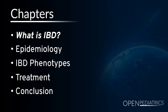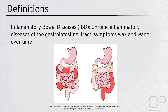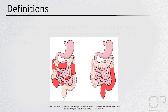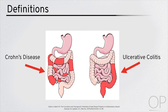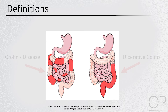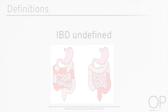What is IBD? Inflammatory bowel diseases, or IBD, are chronic inflammatory conditions that primarily affect the gastrointestinal tract. The two main types of IBD are Crohn's disease and ulcerative colitis. When the clinician cannot distinguish between the two, we refer to this as IBD undefined.